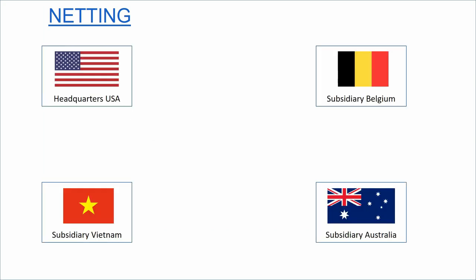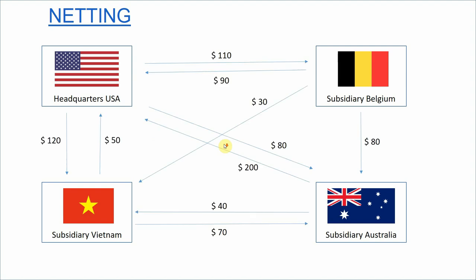We have an American multinational, so the headquarters are in the United States of America, but that group also has a subsidiary in Belgium, Australia, and Vietnam. These are the transactions of January, so what would need to happen?